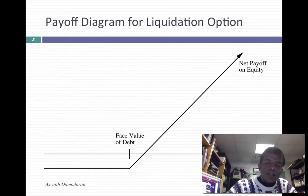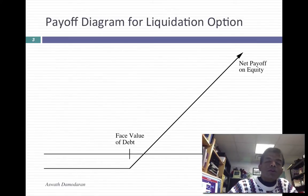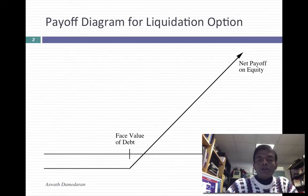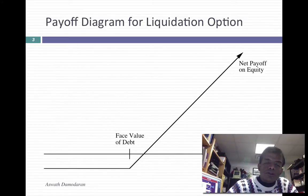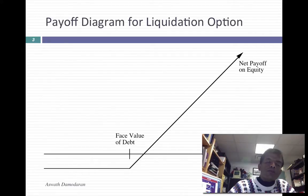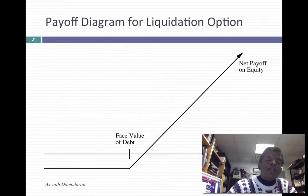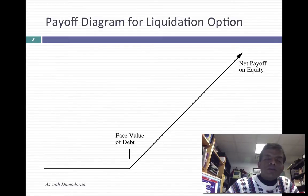Of course, that might not always be the case — the value of the assets could be less than the face value of the debt, and you lose what you originally paid for the stock. As for how long you get to play this option game: you get this power to decide whether to liquidate or not only until the debt comes due. The minute the debt matures, the power shifts back to the lenders. So the life of this option is whatever remaining life there is in your debt.